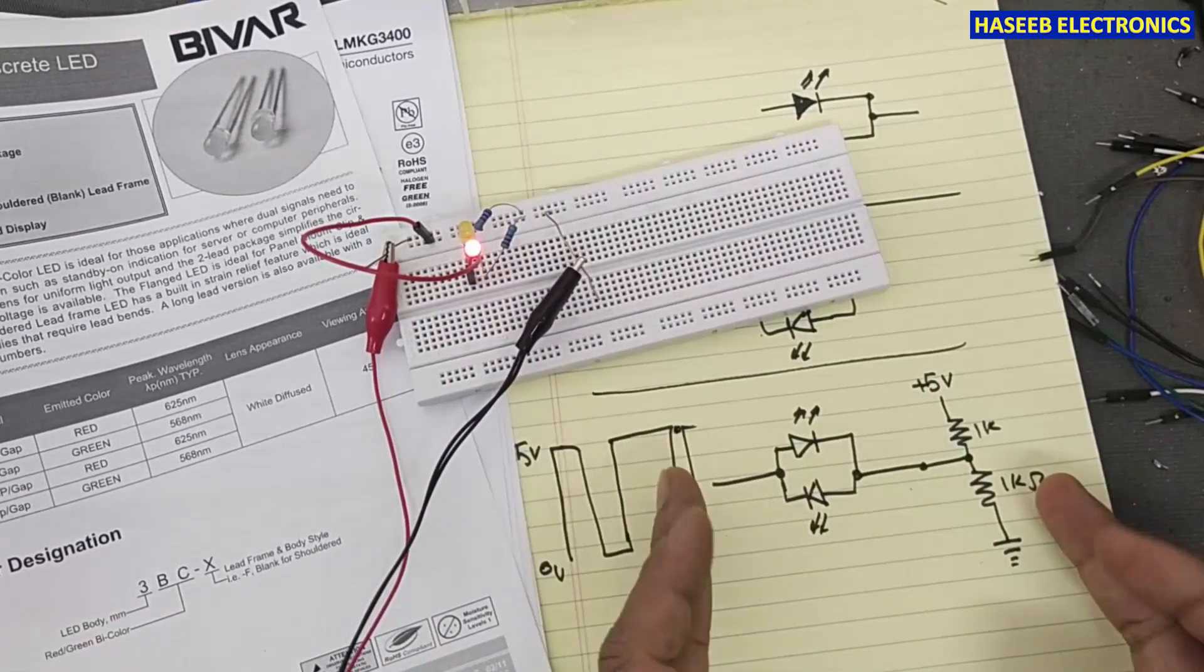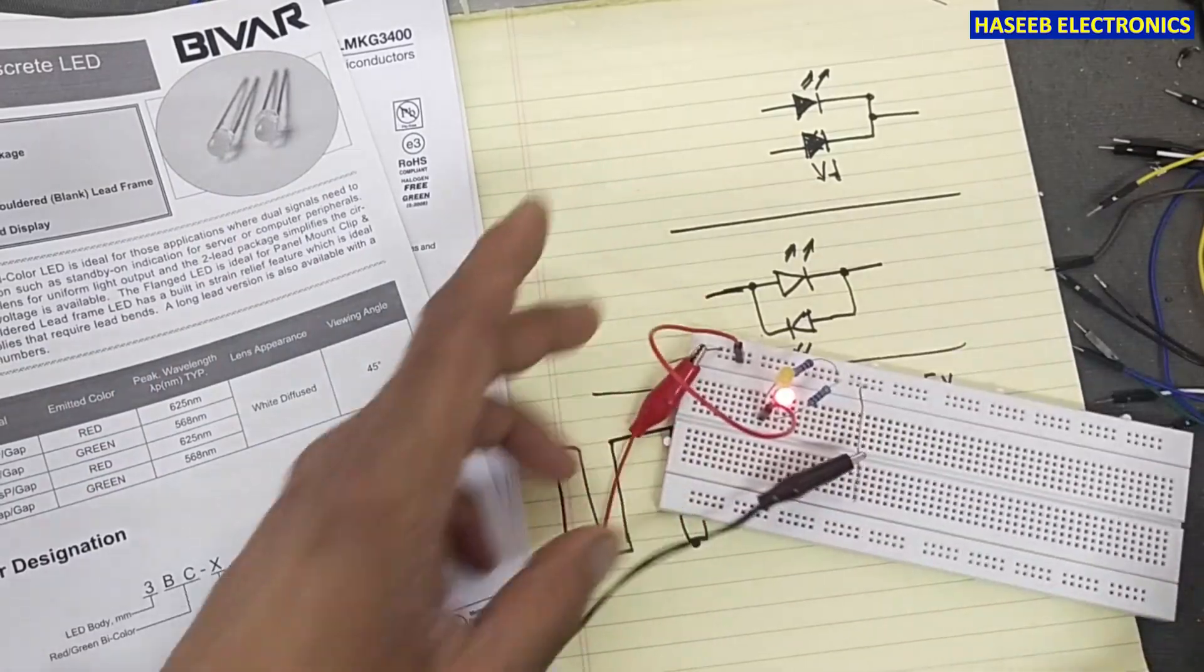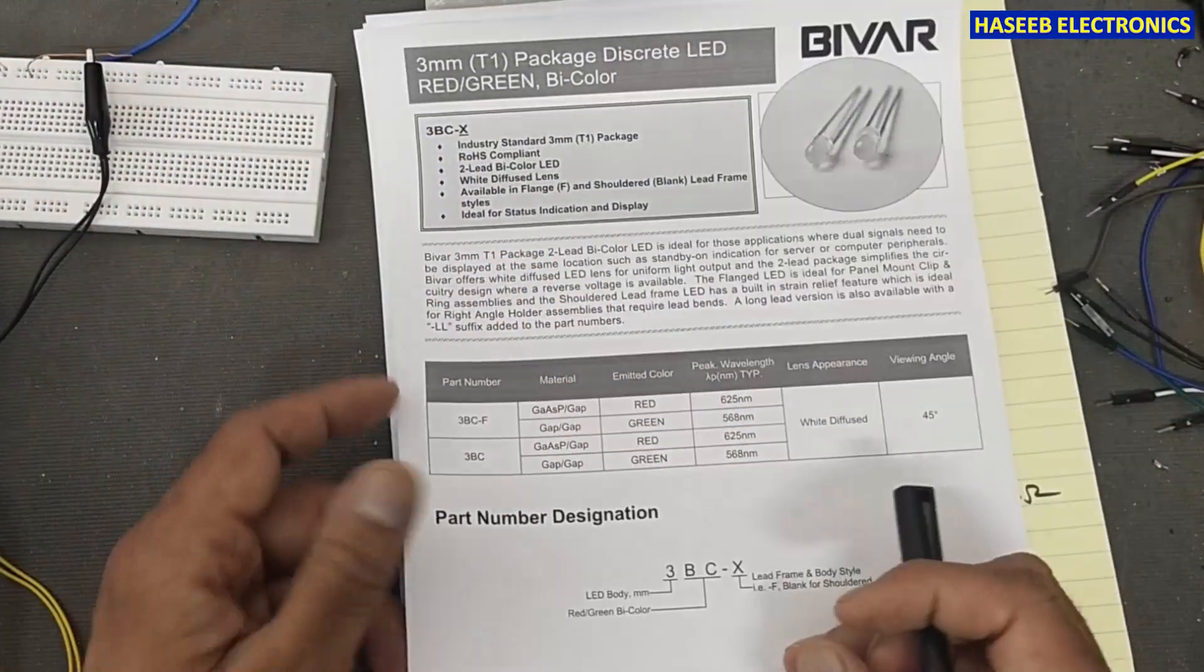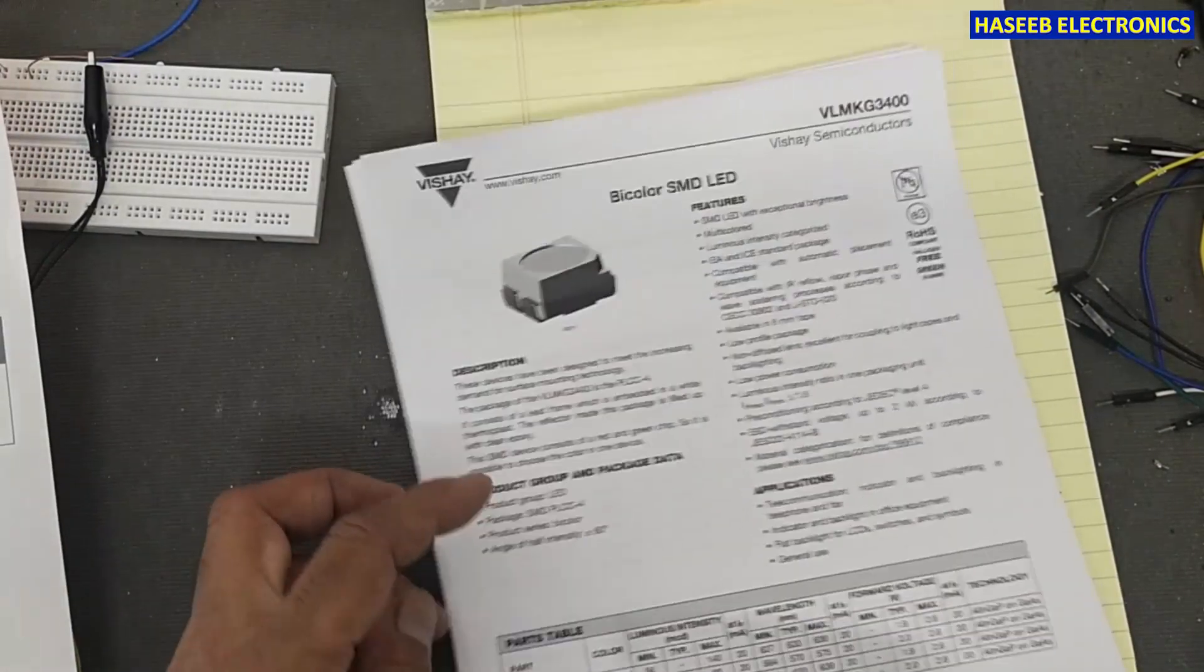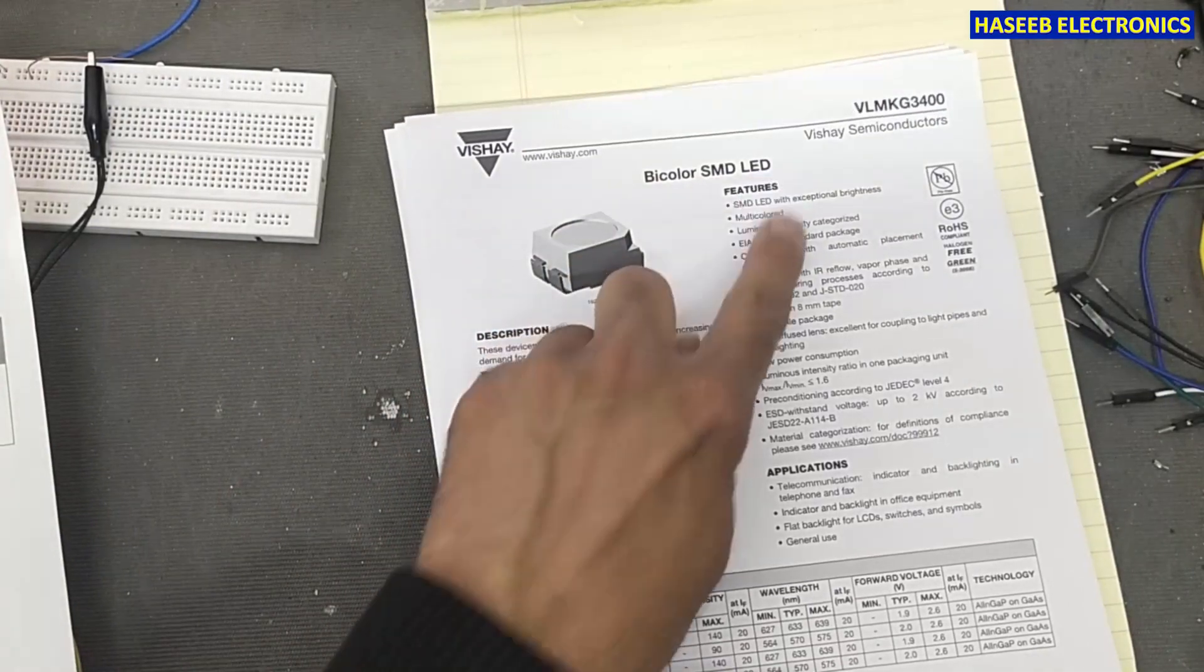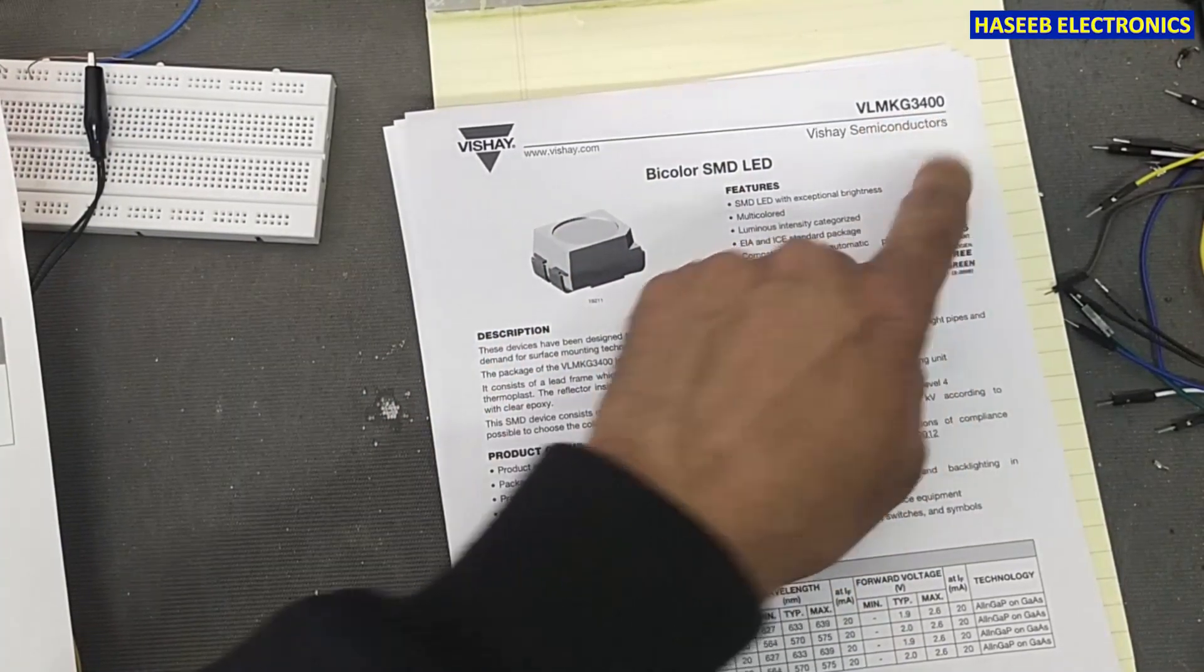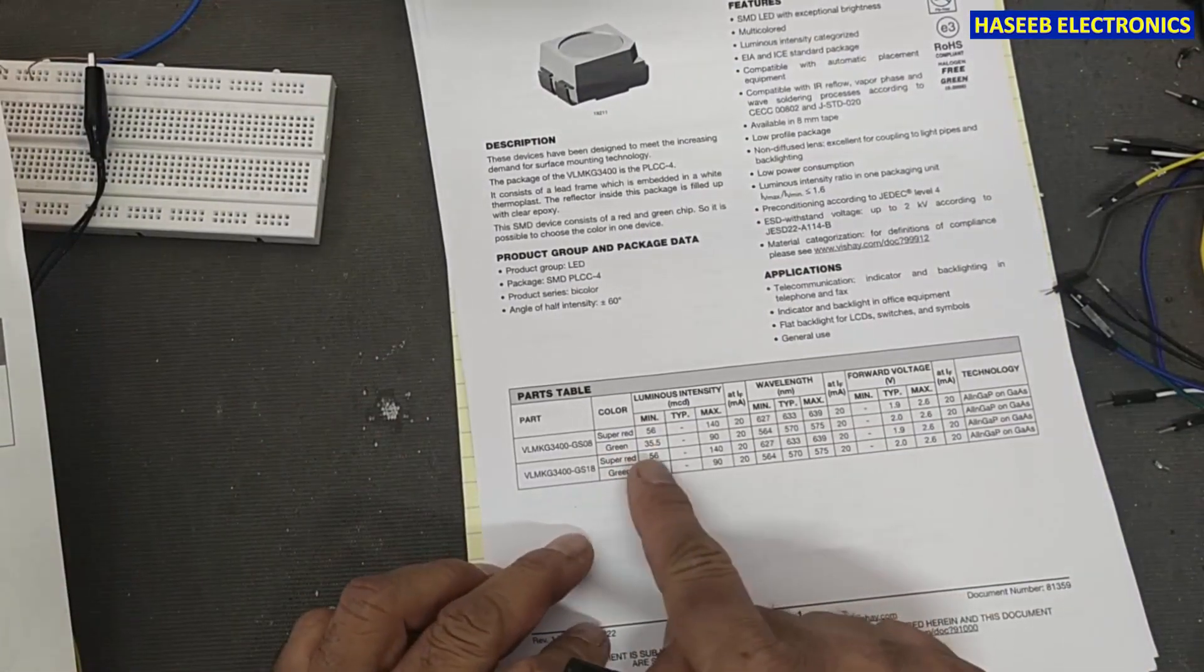Let's see some datasheets. Here is 3BC family, and here is bi-color SMD LED VLMKG3400 series, and it has super red and green.